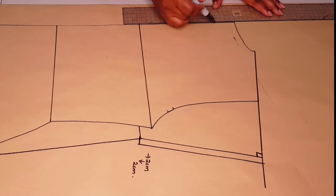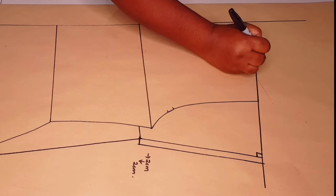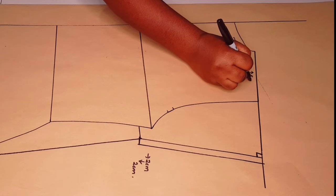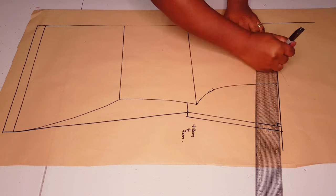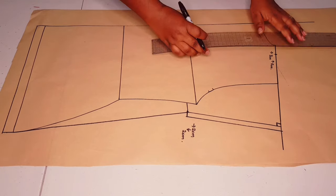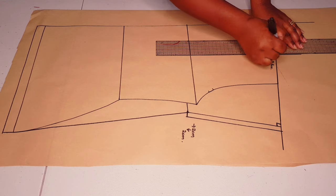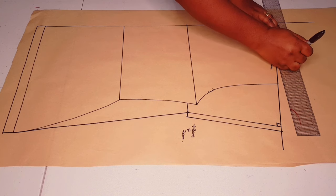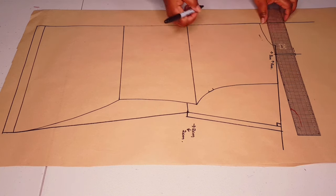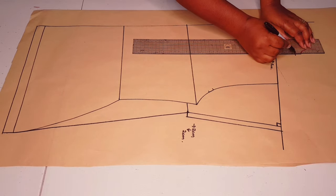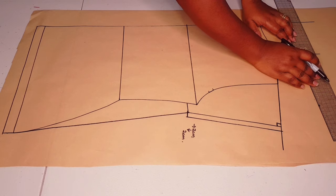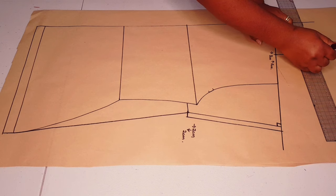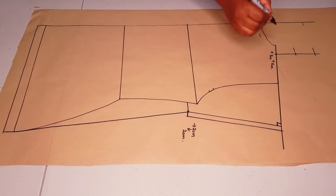Now on to drafting our funnel neckline. Extend the center back line a little further up. At the neck shoulder junction, we're going to move it out by three centimeters and go up the line five centimeters. Square a straight line up using the underarm line. Next, measure five centimeters along the squared line for our neckline height. You can choose to make it shorter or longer. Extending the line a little further and measuring another five centimeters. This will serve as my neckline facing. Then square a point across to the center back line.